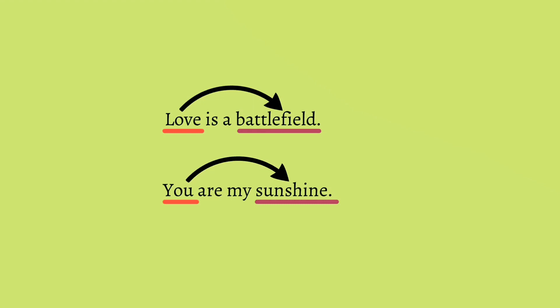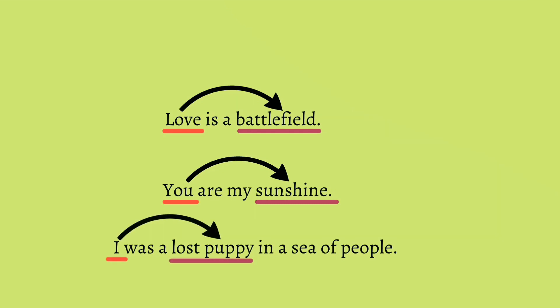Let's look at one last example: 'I was a lost puppy in a sea of people.' In this particular example, there are two metaphors. First, a person is being compared to a lost puppy to convey that he or she feels clueless in a crowd. Another metaphor is 'sea of people,' where the crowd is being compared to a sea to convey that it is endless and overpowering.